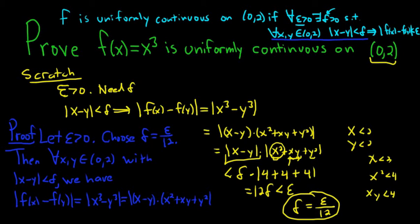And again, we can break up the absolute values, so no problems there. This will be equal to the absolute value of x minus y times the absolute value of x squared plus xy plus y squared.